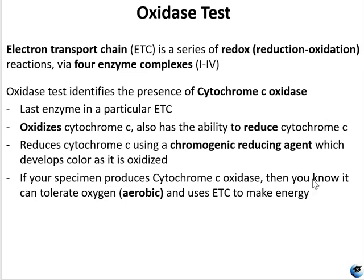For example, the gram-negative Pseudomonas aeruginosa and gram-negative Vibrio cholerae use cytochrome C oxidase, which can be detected using the oxidase test. In contrast, other gram-negative Enterobacteriaceae like E. coli are negative for this test because they produce a different cytochrome oxidase other than cytochrome C oxidase.